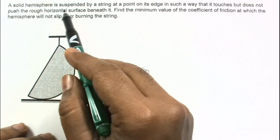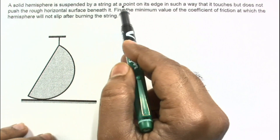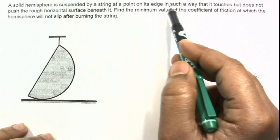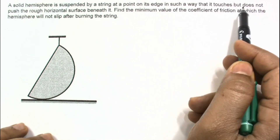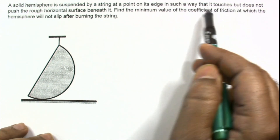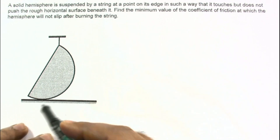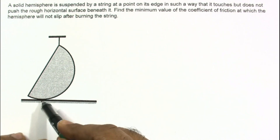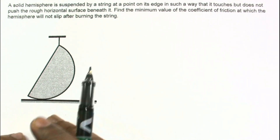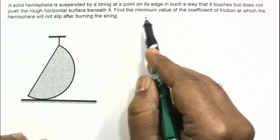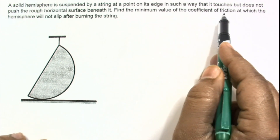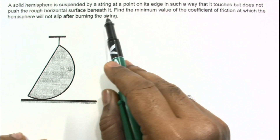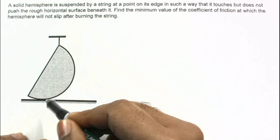In the given problem, a solid hemisphere is suspended by a string at a point on its edge, as shown in the figure, such that it touches but does not push the rough horizontal surface — meaning the normal reaction at that point is zero. We need to find the minimum value of the coefficient of friction at which the hemisphere will not slip after the string is burned.